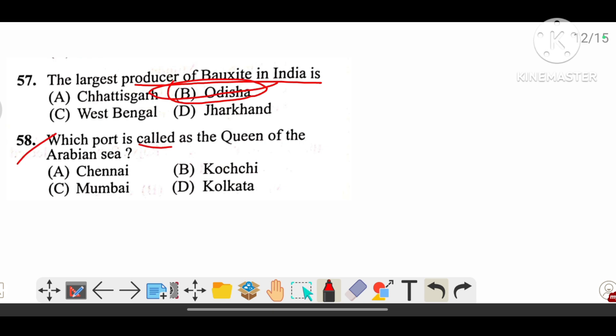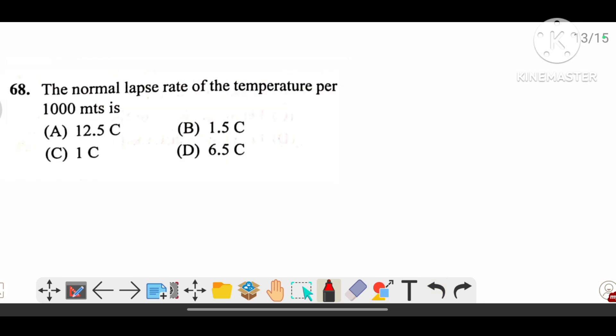Which port is called the queen of the Arabian Sea? The answer is B, that is Kochi. The normal lapse rate of temperature per 100 meters is D, that is 6.5 degrees Celsius.